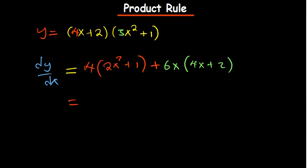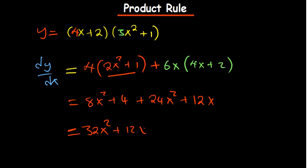So this becomes, if we try to open this bracket, 4 times what is inside there, you are going to have 8x² + 4, plus 6 times 4 is 24x². 6x times 2 becomes 12x. If we are to collect the like terms, 24 plus 8 basically becomes 32, and then we have a 12x there plus a 4. So this becomes the derivative.